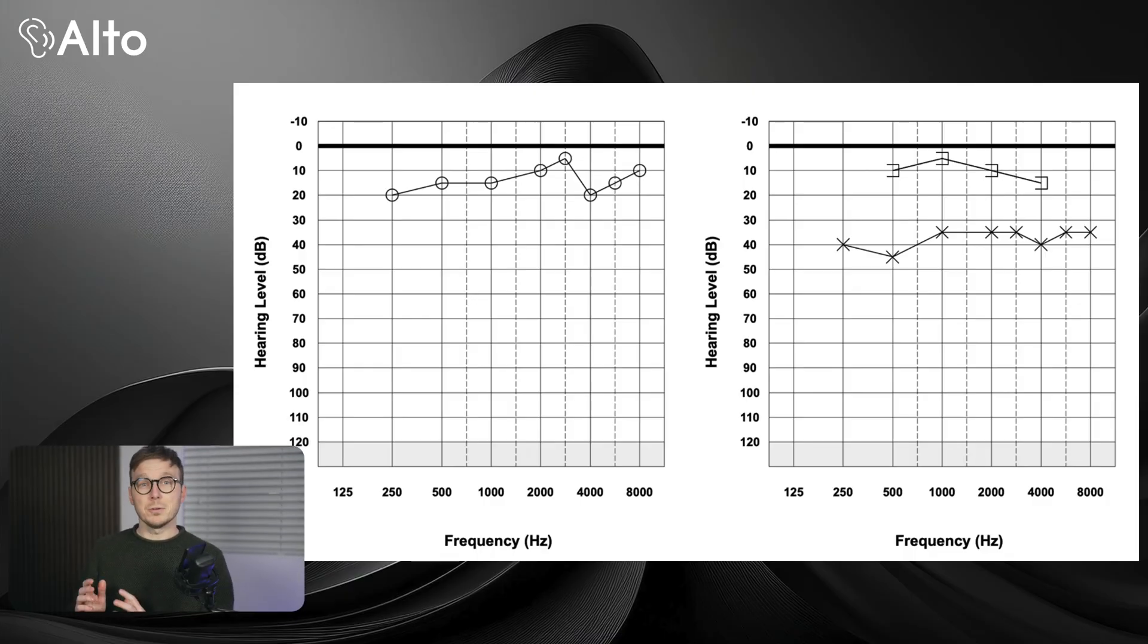Now, if you've got an audiogram in front of you, you might see even more symbols. Some of these indicate something called masking. When we test one ear, the other ear sometimes picks up the sound too. And if that happens, we use a technique called masking, where we play masking noise in the non-test ear to make sure we're measuring the ear we actually want to test.